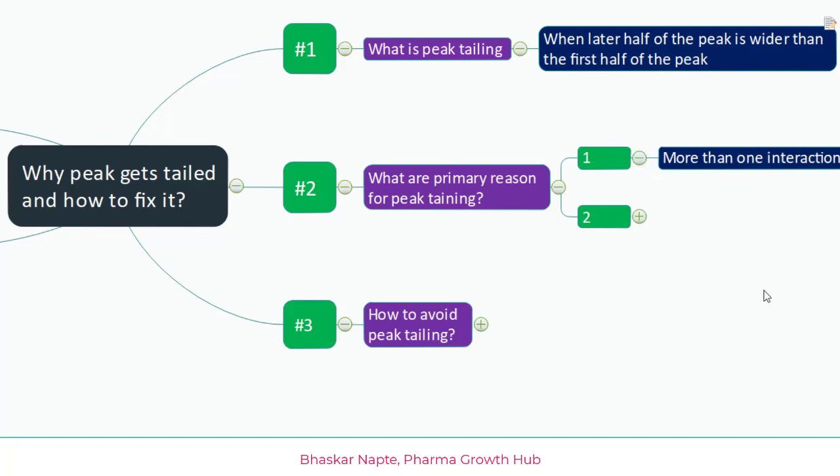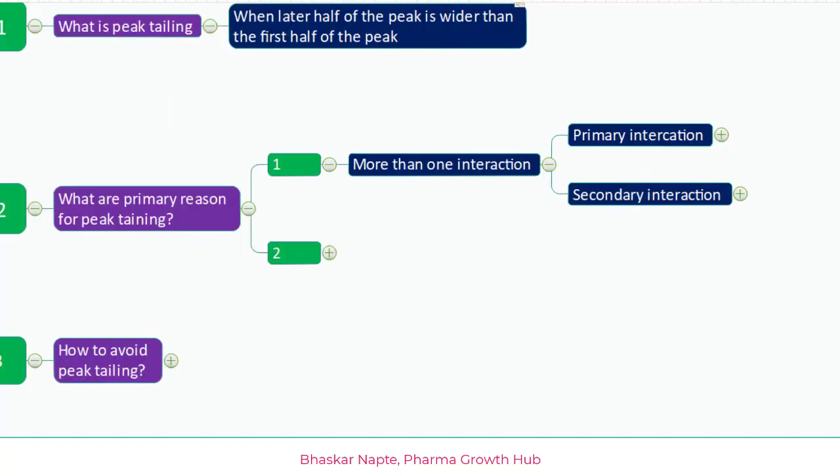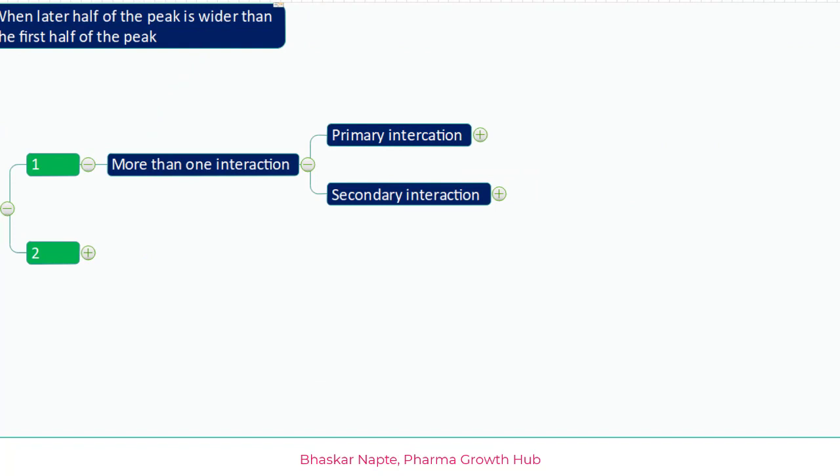More than one interaction can certainly lead to peak tailing. We know that retention of the analyte happens because of certain interactions with the stationary phase. In reversed-phase chromatography, the hydrophobic interaction is the primary interaction by which retention occurs. But is that the only reason, or is there another reason by which your compound also gets retained onto the stationary phase? That is called the secondary interaction.